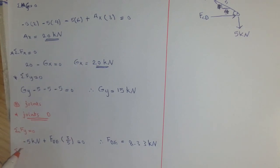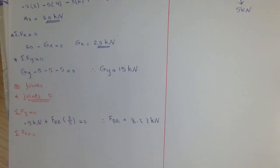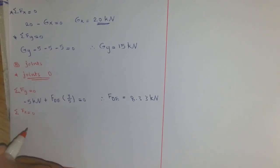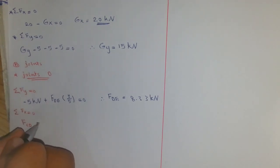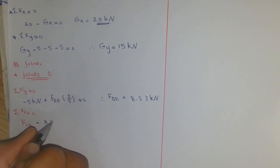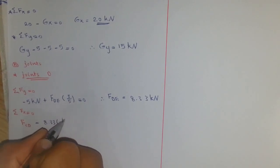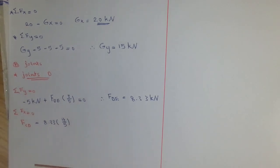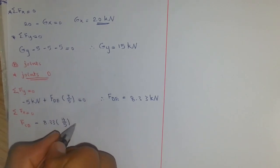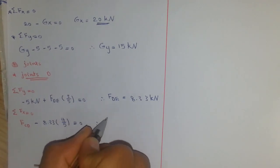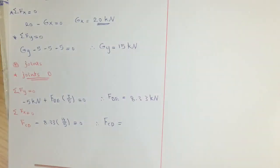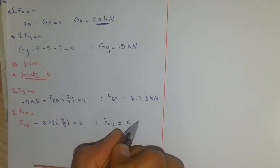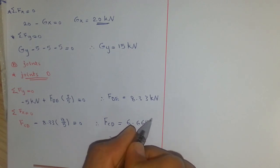Next, summation of Fx equals zero: F_CD minus 8.33 multiplied by 4 over 5, which is the horizontal component of that force, equals zero. Then F_CD equals 6.664 kilonewtons.